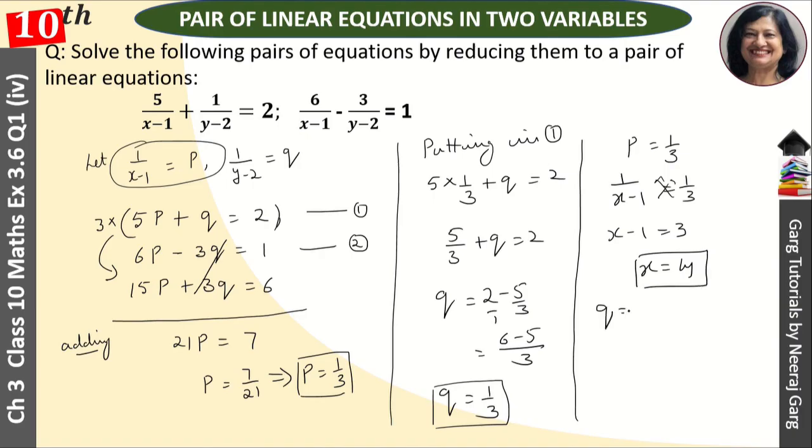Similarly, q is equal to 1 upon 3. The value of q is 1 upon y minus 2. Then 1 upon y minus 2 is equal to 1 upon 3. Then y is equal to 5. In this way,